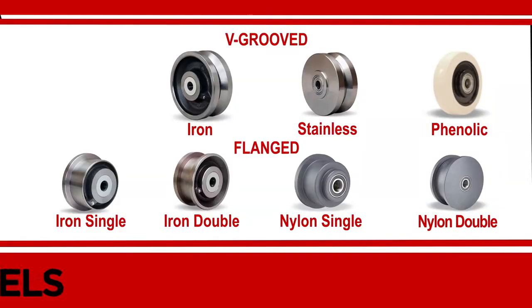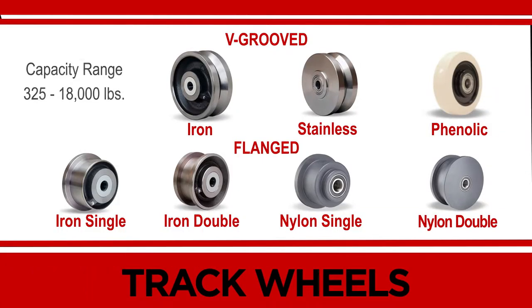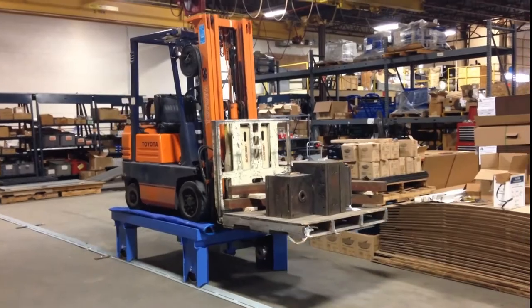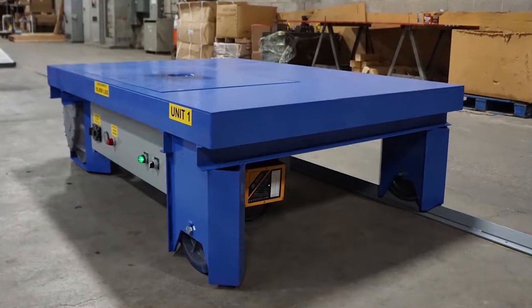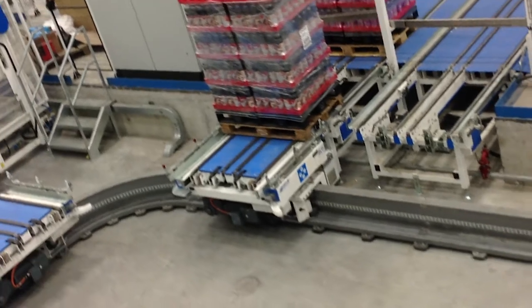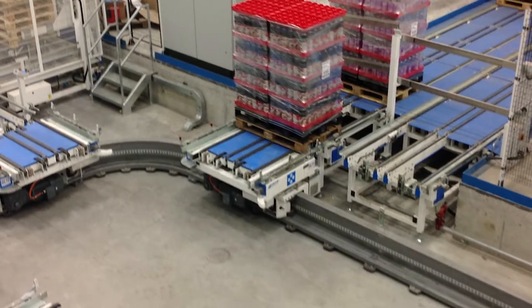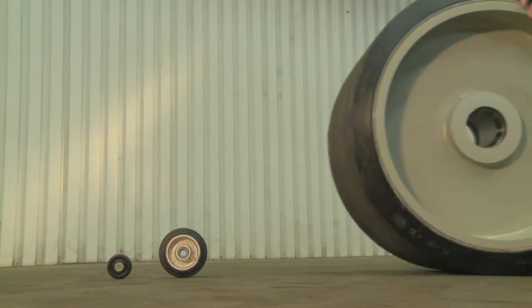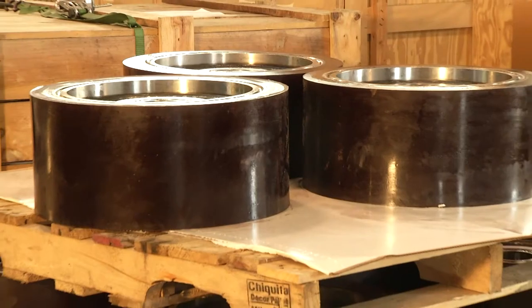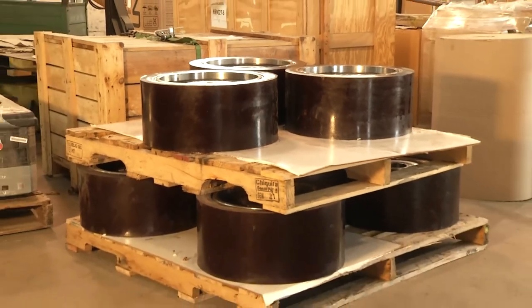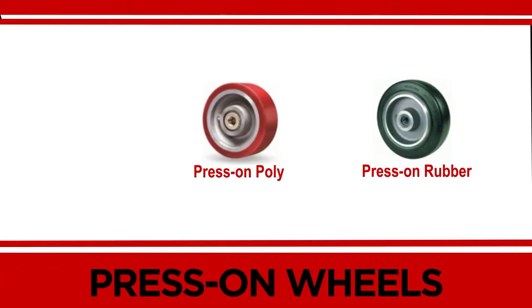Hamilton has the industry's most comprehensive line of track wheels. With v-grooved and flanged wheels, loads are taken off the floor, permitting higher capacities, easier rolling, floor protection, and controlled flow all at the same time. A press-on wheel is a high capacity wheel where a solid rubber or poly tread is chemically bonded to a replaceable steel ring that is pressed onto a cast iron center. Choose from heavy duty polyurethane or high capacity rubber tires.